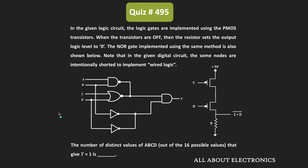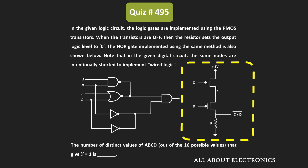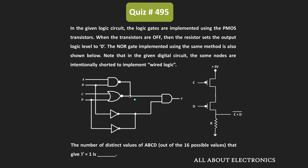Welcome to the YouTube channel All About Electronics. In this question, we have been given a logic circuit implemented using PMOS transistors. We have also been given how the NOR gate is implemented using PMOS transistors. For the given digital circuit, some of the nodes are intentionally shorted to implement the wired logic. We are asked to find the number of distinct values for the inputs ABCD for which the output Y will become 1.